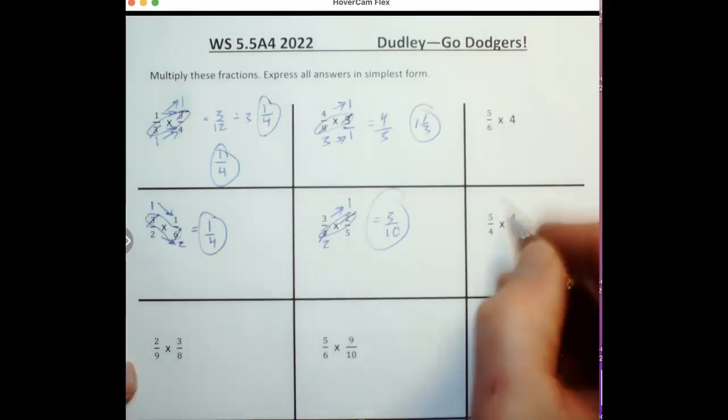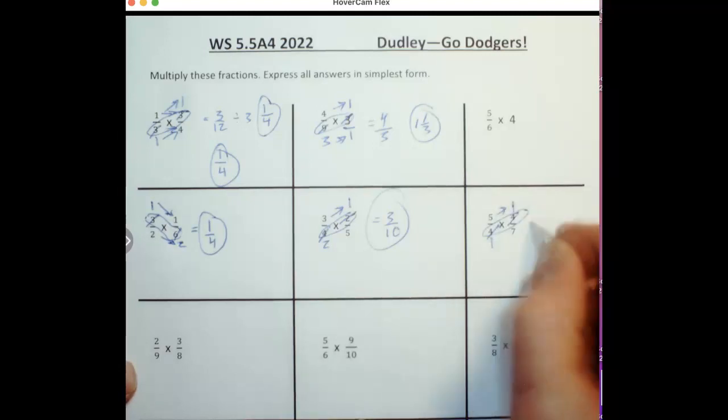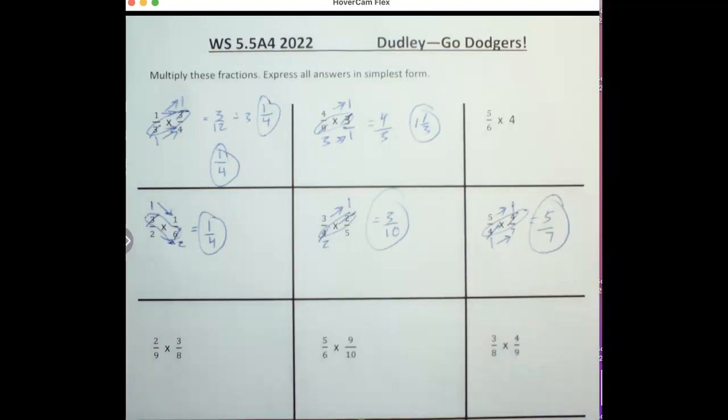Do one more here. See how I can cross-reduce there, I can divide both these by 4. 5 times 1 is 5, 1 times 7 is 7, we've got 5 sevenths. Good luck.